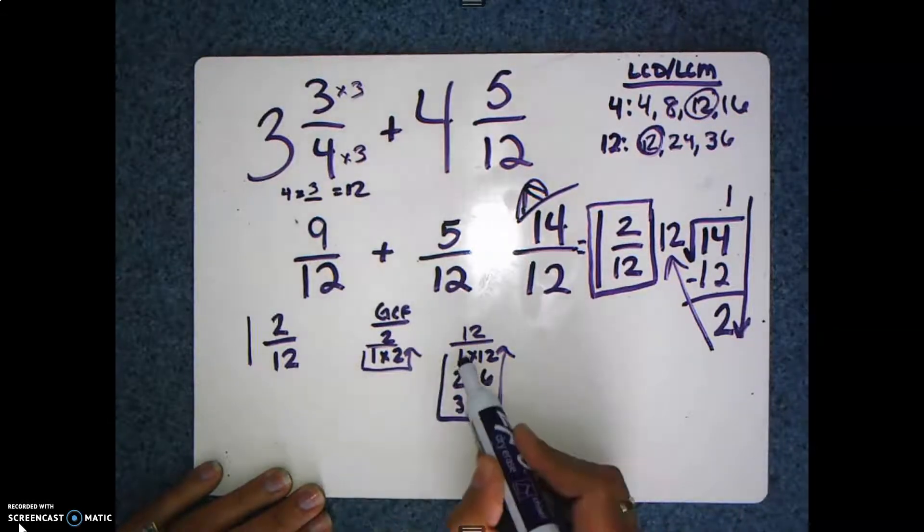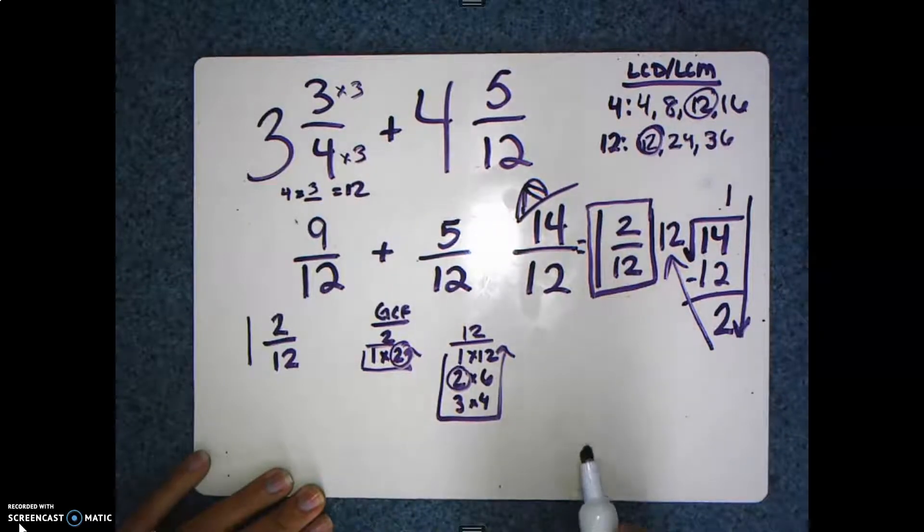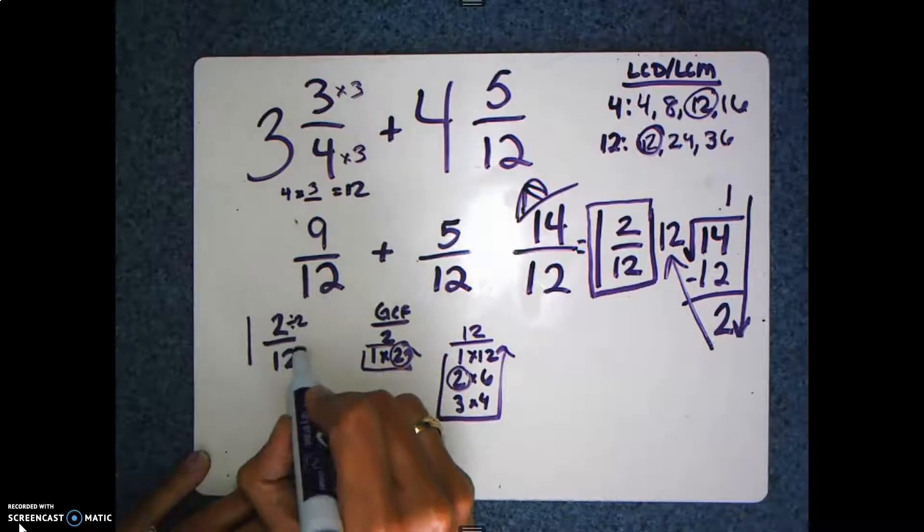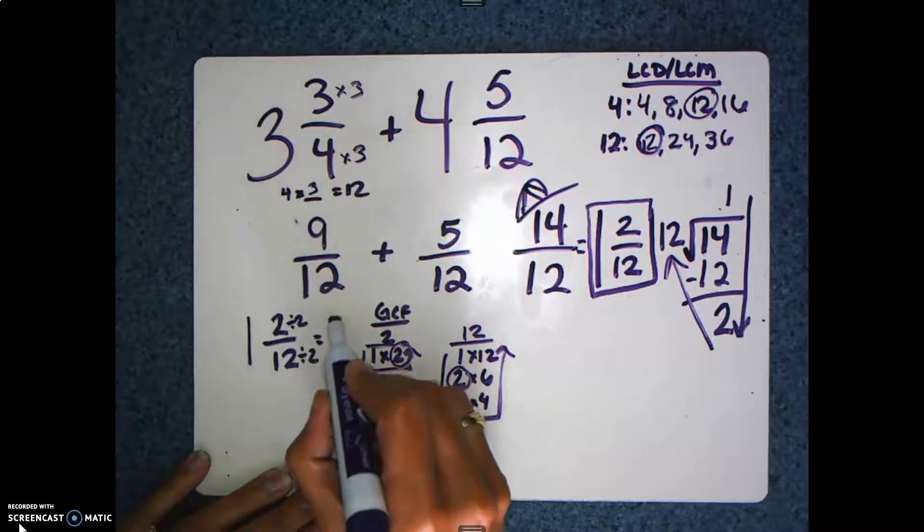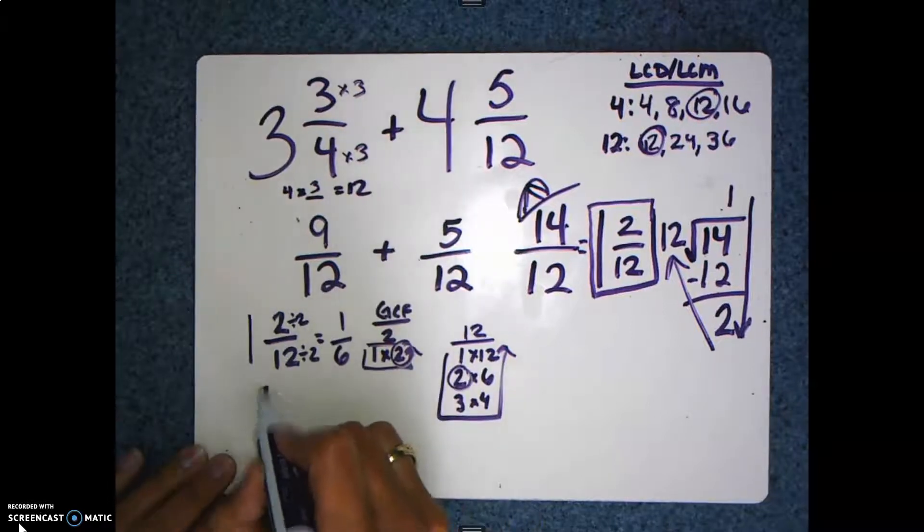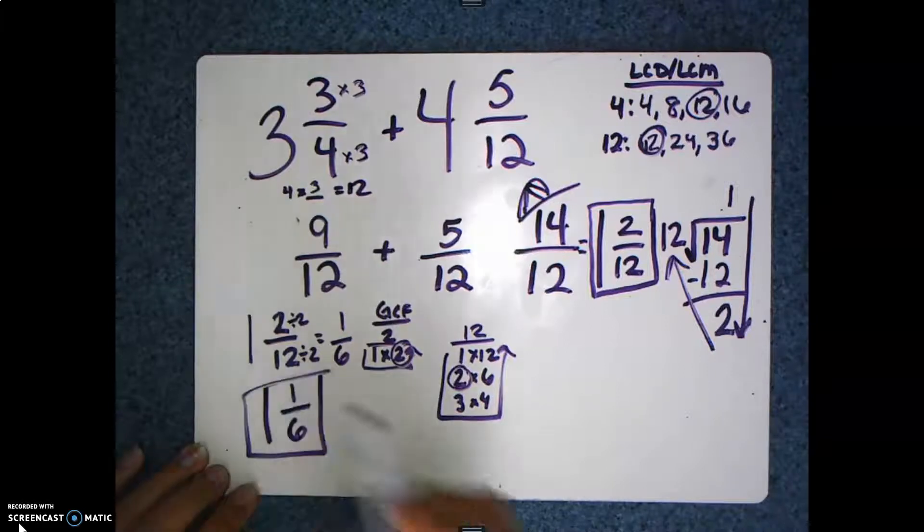Now if I look at this, they have two numbers in common, they have 1 and 2, but 2 is the greatest. Since 2 is the greatest common factor, I divide the numerator by 2 and the denominator by 2, and we get ⅙. So now my mixed number is actually 1⅙.